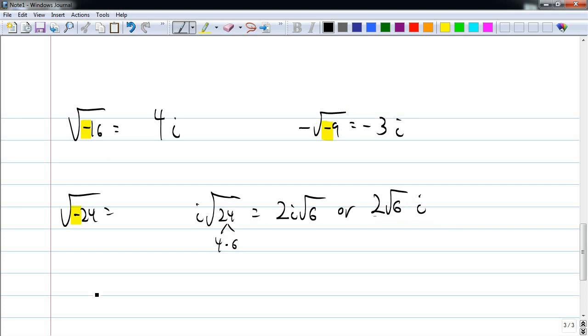Let's try one more. Let's try negative square root of negative 32. The negative, nothing happens to it. The negative on the inside comes out as i. Square root of 32. 32 is 16 times 2. So I can take the square root of 16. That's 4. And the 2 remains under the radical. So I can write it this way. Or that way.